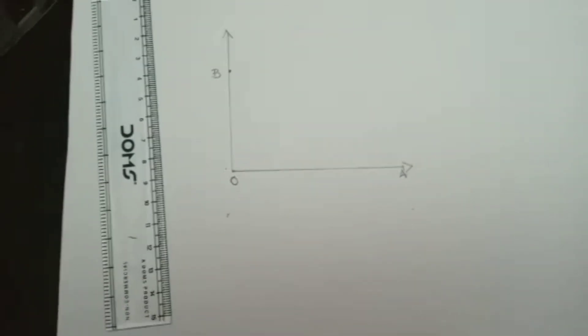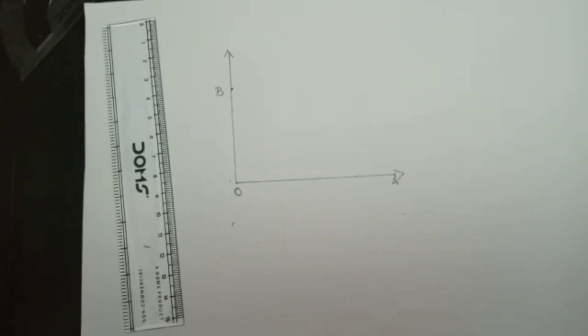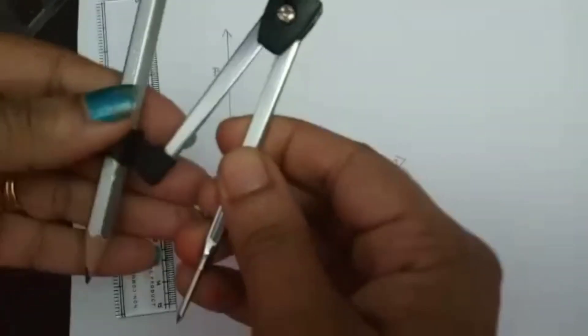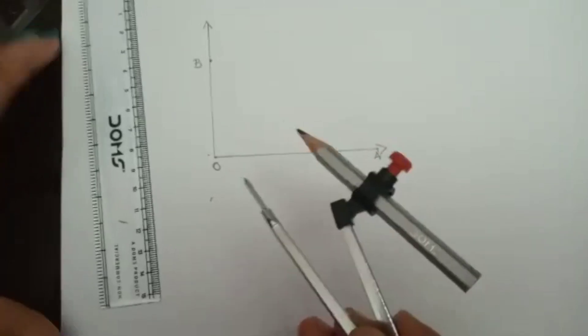Now we are going to trisect it, so we have to take the compass. You can just open it up - there is no specific measurement, we can take any radius. Keeping O as center...